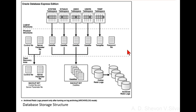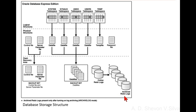The flash recovery area contains the following structures: a backup of the server parameter file and control file stored in an archival format called a backup set, another backup set containing a backup of the data files, online redo log files, and archived redo files, which are copies of redo log files after they are filled.